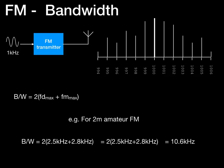It's worth noting that 10.6 kHz is quite a lot when we're only sending a maximum audio frequency of 2.8 kHz. For SSB, 2.8 kHz maximum frequency would also be the maximum bandwidth — so FM, even narrowband FM, is not very efficient in terms of bandwidth. This is why FM is generally restricted to VHF and above where there is more room, and is not used on the HF bands where bandwidth is at a premium.